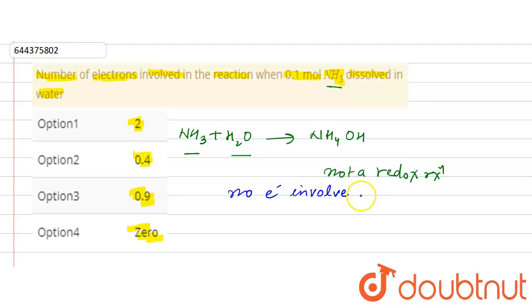In this reaction, it is simply an exchange of ions from H2O. So here, zero number of electrons involved in the reaction. Option 4 is correct. So that's our solution for this question. Thank you.